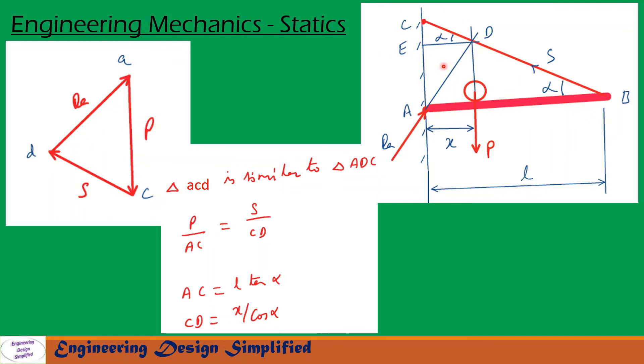Now let us see the geometry here. In this geometry, triangle ACD is similar to this triangle ACD. So using this similar triangles principle we can write P by AC equal to S by CD.